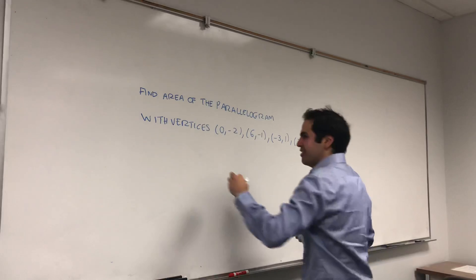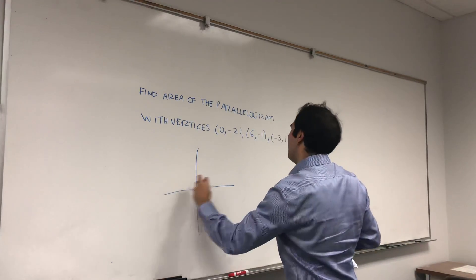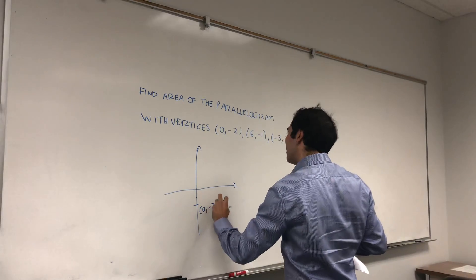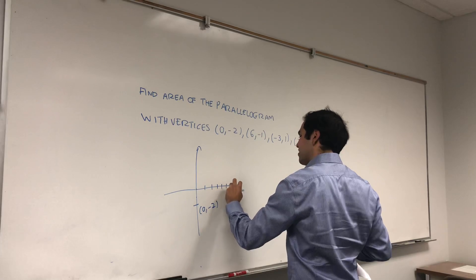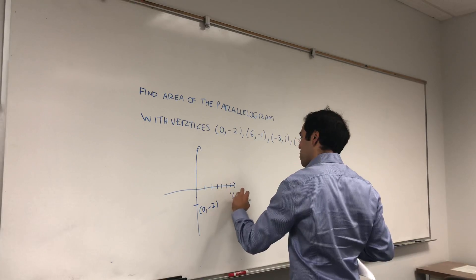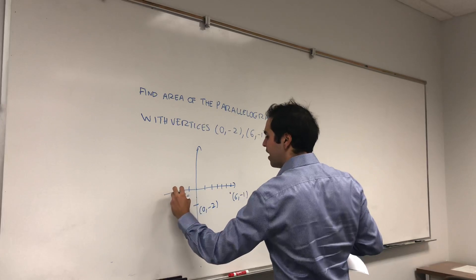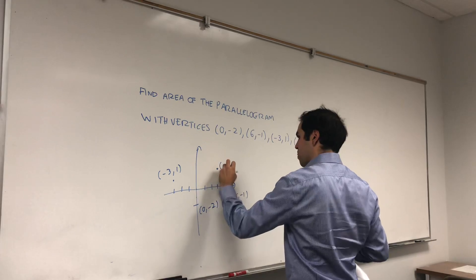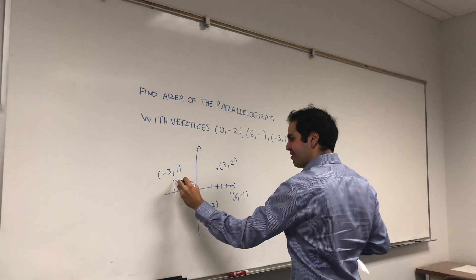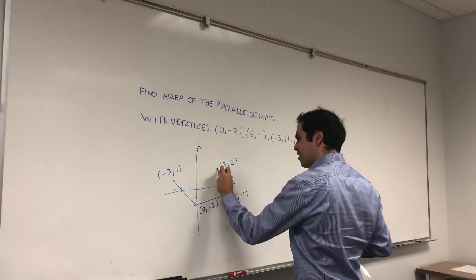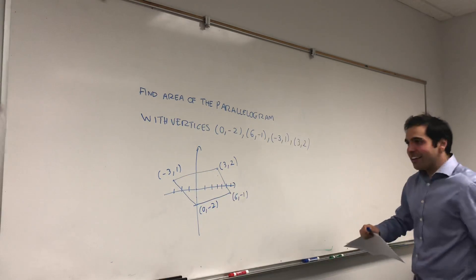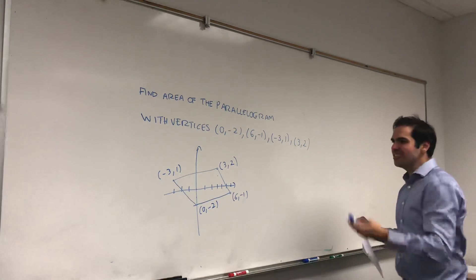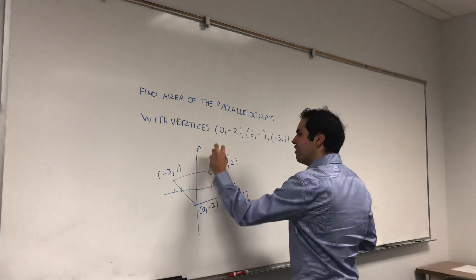All right, now let me draw a picture of this. So zero minus two, and then six minus one, and then minus three one, and then three two one two seven. Let's see, does it look like a parallelogram? Not bad. I mean, I've drawn worse objects, but it's supposed to look like a parallelogram, and we want to find the area.